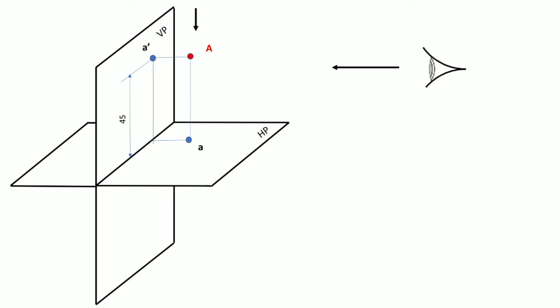Point a-dash can be plotted at a distance of 45 mm above the XY line. Similarly, point a will be at a distance of 20 mm from the XY line, since the actual point A was kept 20 mm in front of the vertical plane. To show both the front view and top view, we need to rotate the horizontal plane clockwise by 90 degrees so that it overlaps with the downward vertical plane.